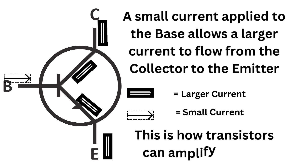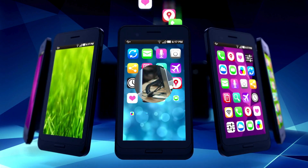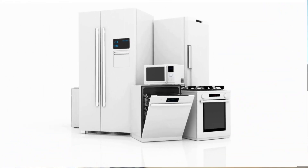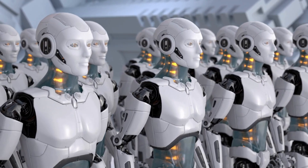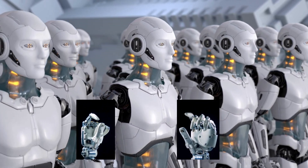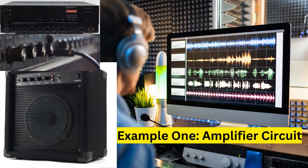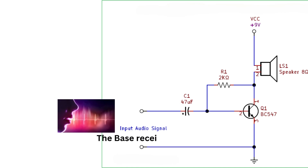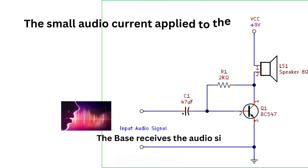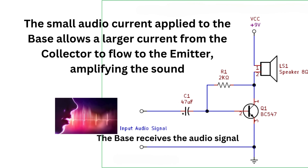Together, these three parts work as a switch or amplifier. When a small current flows into the base, it allows a larger current to flow from the collector to the emitter — this is how transistors can amplify signals. Transistors are used in everything from smartphones and computers to televisions and appliances. Basically, if it runs on electricity, there's a good chance it has transistors inside. In an audio amplifier, for example, the base receives the audio signal, and the small audio current applied allows a larger current to flow, amplifying the sound.